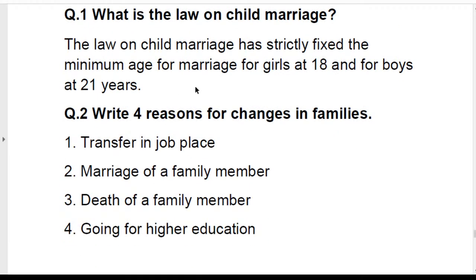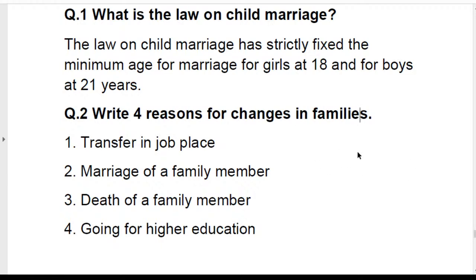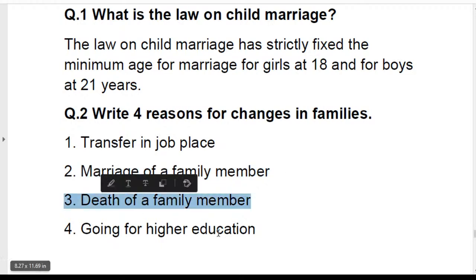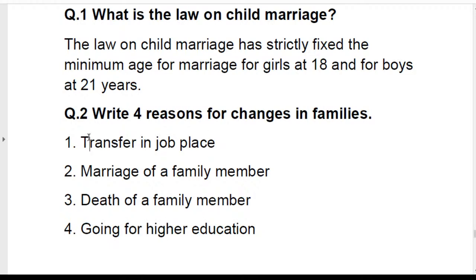Questions on chapter nine: What is the law on child marriage? The minimum age for girls is 18 and for boys is 21 years. Write four reasons for changes in families: transfer of a family member's job, marriage of a family member, death of a family member, and going away for higher education.